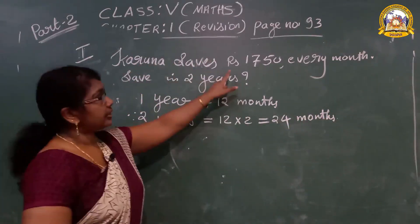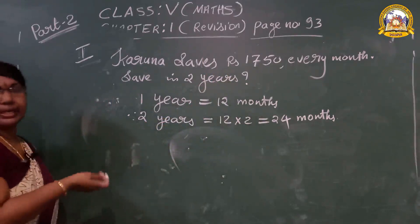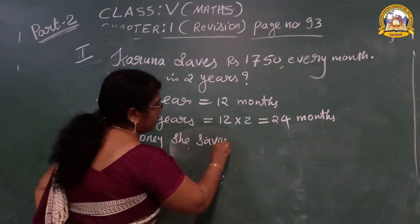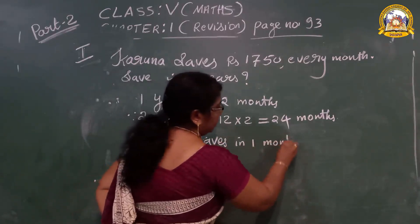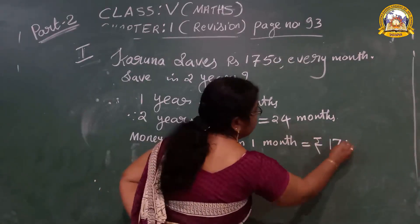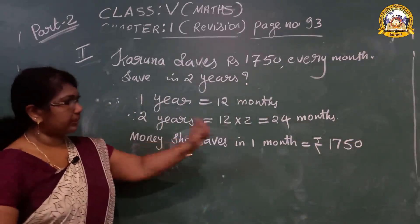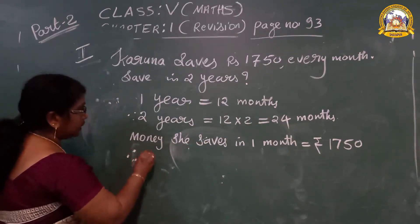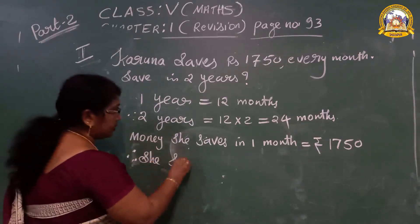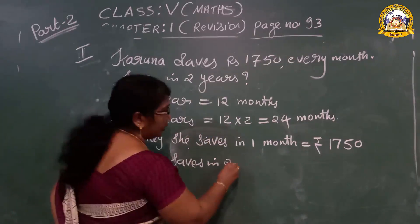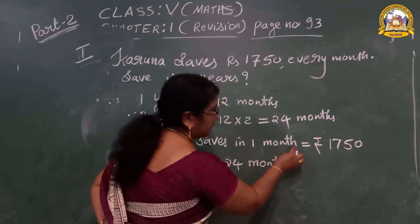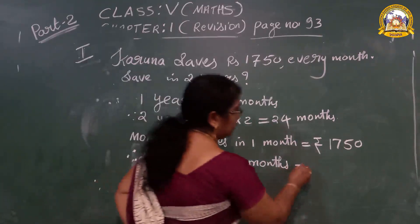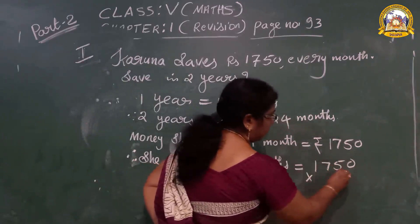Now we are going to write the steps. You can write: money she saves in one month = ₹1,750. She saves for 24 months. Therefore, she saves in 24 months: 1,750 multiplied by 24.